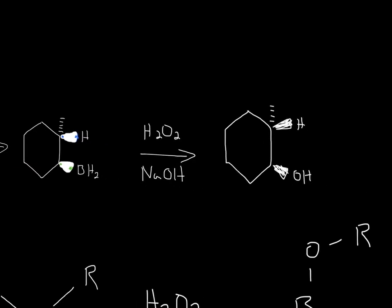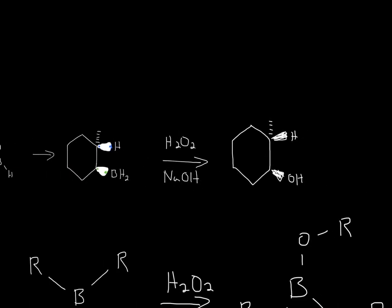Next, you add H2O2 and NaOH. H2O2 gets rid of the BH2, and then NaOH, the OH, forms the alcohol. Now let's go into the mechanism of what this exactly does to make this.